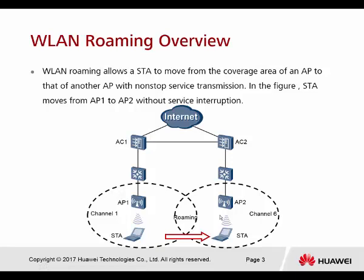When you configure Roaming, the first thing you need to make sure is that the coverage areas of the Roaming services must be using the same SSID. For the channel, it is recommended to use two different channels to reduce interference when stations perform Roaming in the overlapping area.